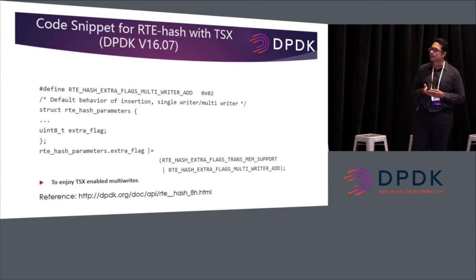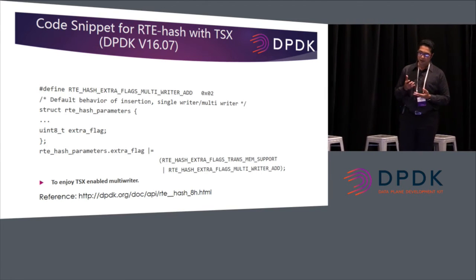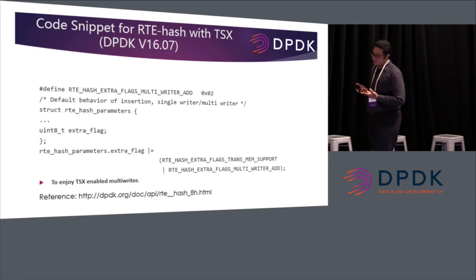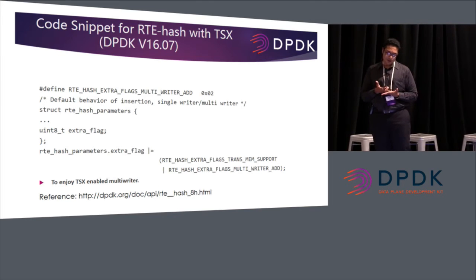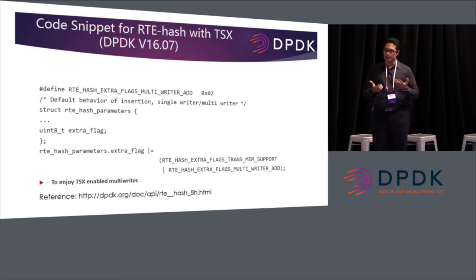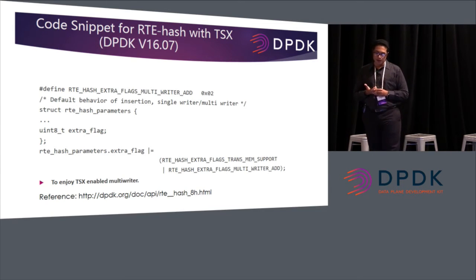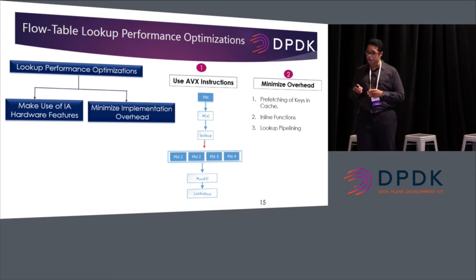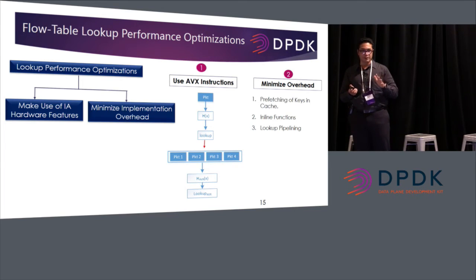With these changes, the results on our Broadwell server show that the blue line — the insert rate in millions of insertions per second — with TSX improves almost linearly with the number of cores, compared to the original case without TSX. All the shaded area represents the gain on top of using regular software locks. This is what the library in 16.07 is doing. To use it, in rte_hash.h you'll see a flag called multi-writer — if this flag is set, you enable multi-writers and the library works with TSX.